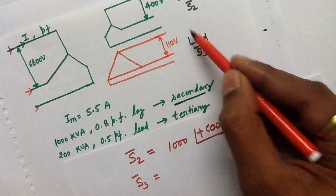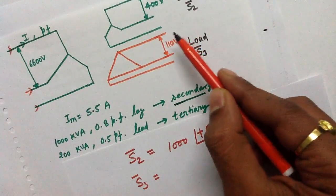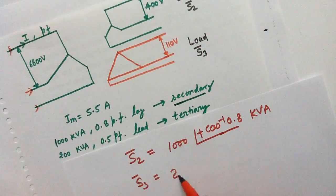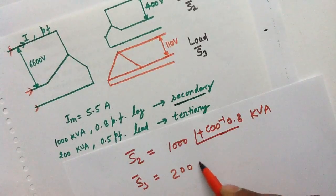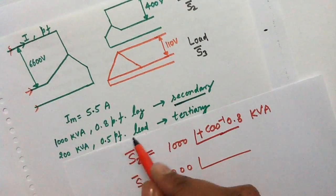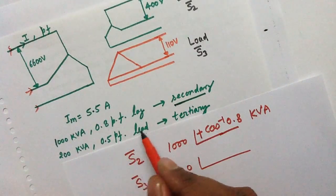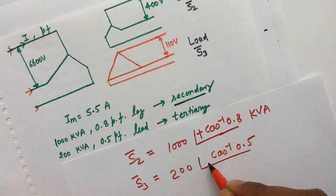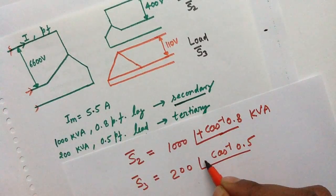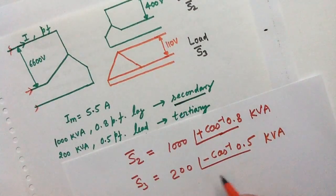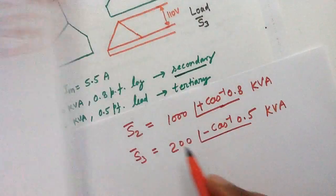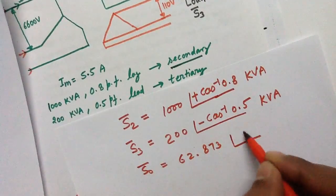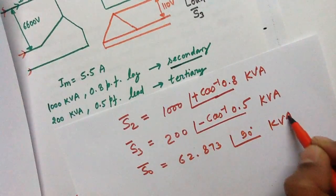For S3: the 200 kVA load on the tertiary winding is leading at 0.5 power factor. So S3 = 200∠(−cos⁻¹ 0.5) kVA, using a negative sign due to the leading nature of the power factor. S0 = 62.873∠90° kVA.